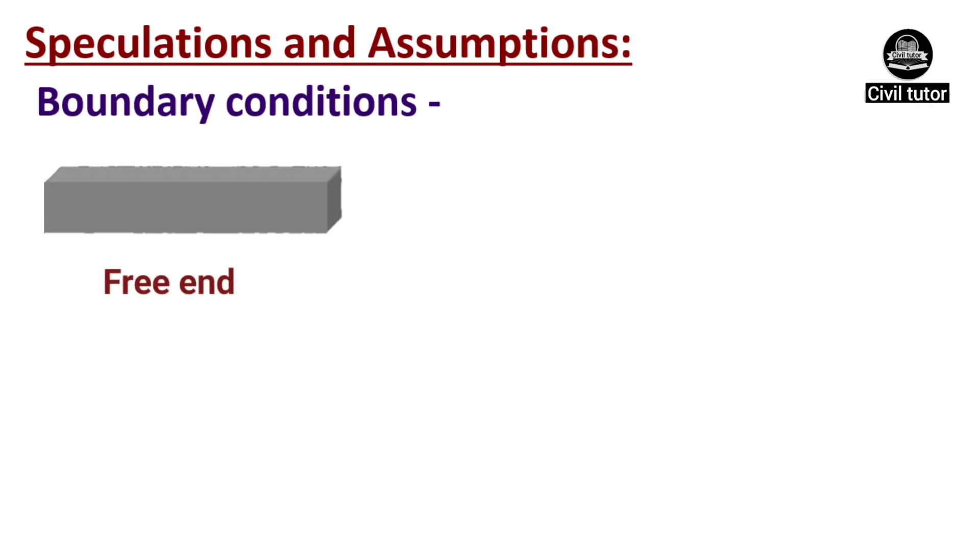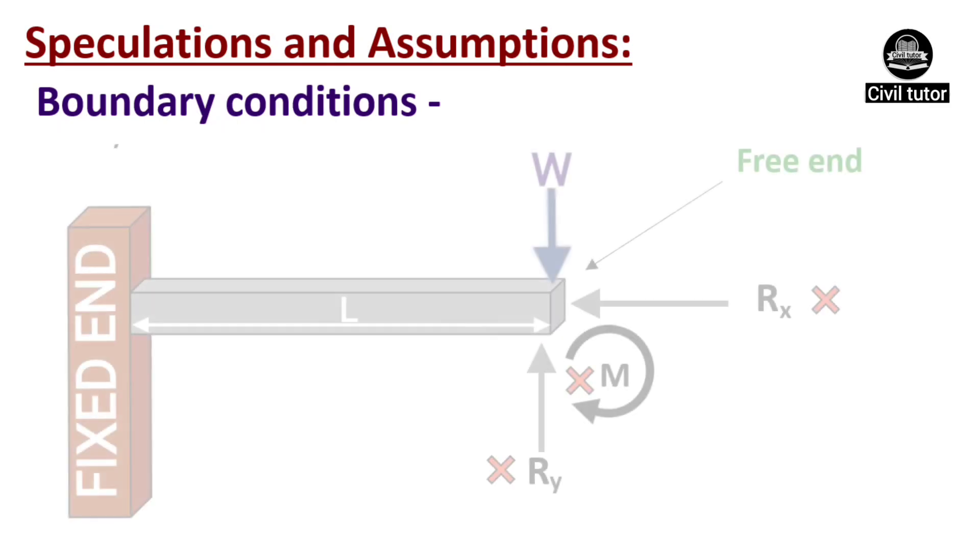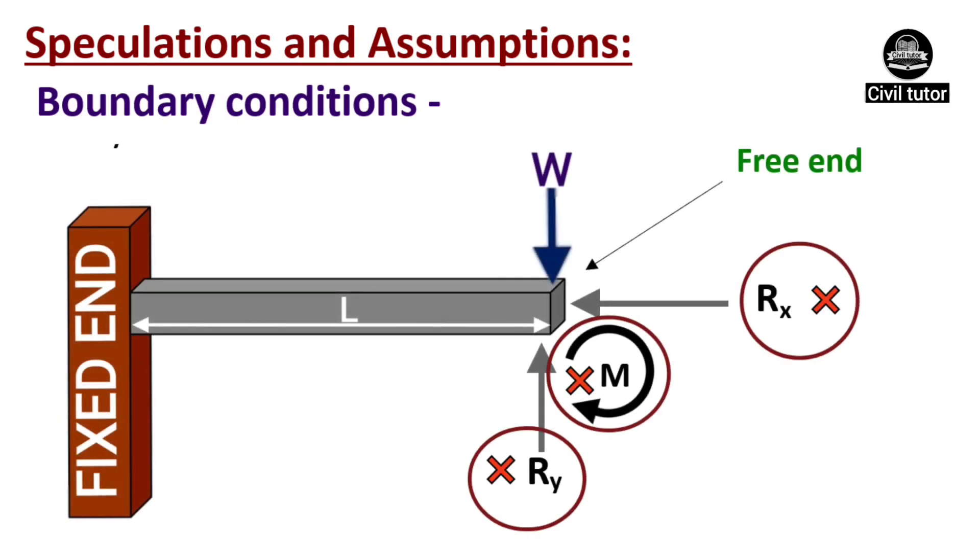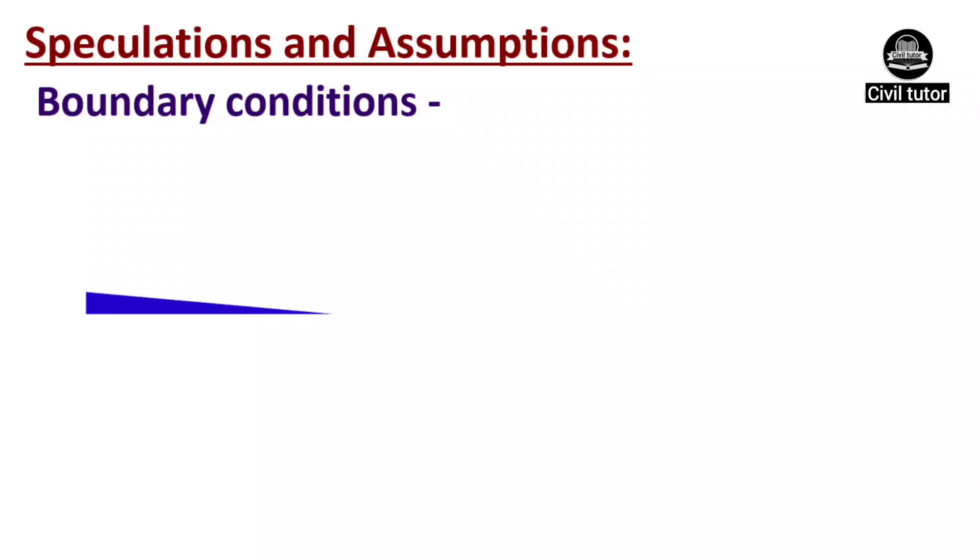Since the free end of a structure can have linear or rotational displacement in any direction, therefore no reaction is developed at the free end. For illustration, let's consider the free end of a cantilever beam.